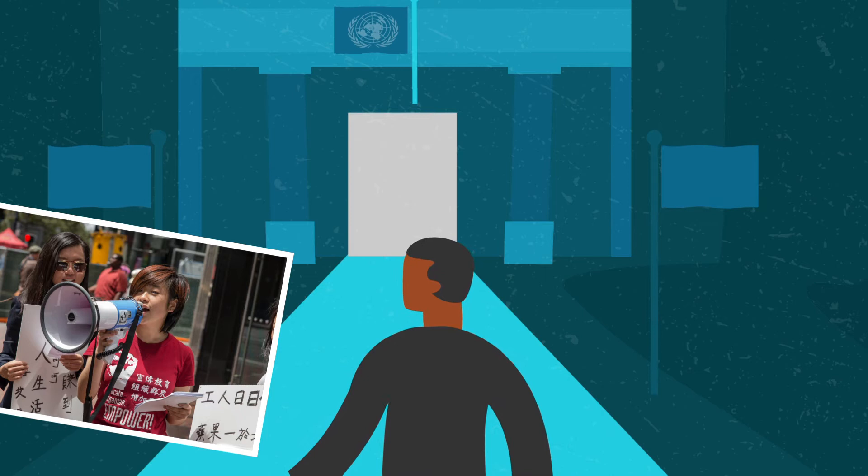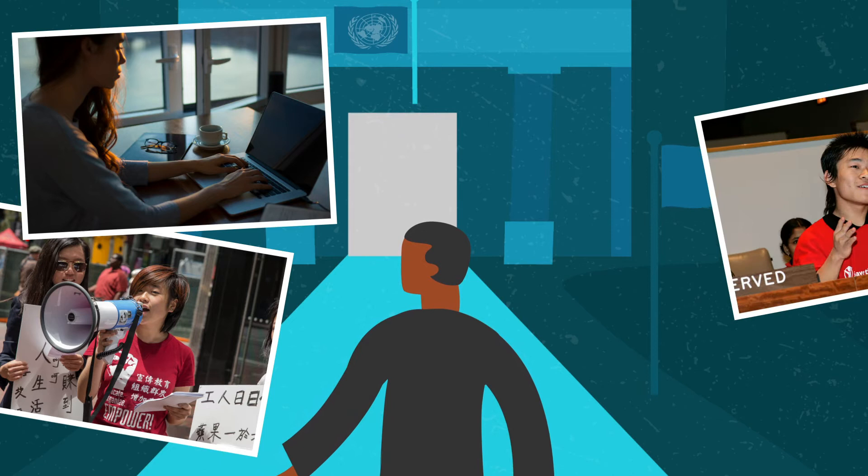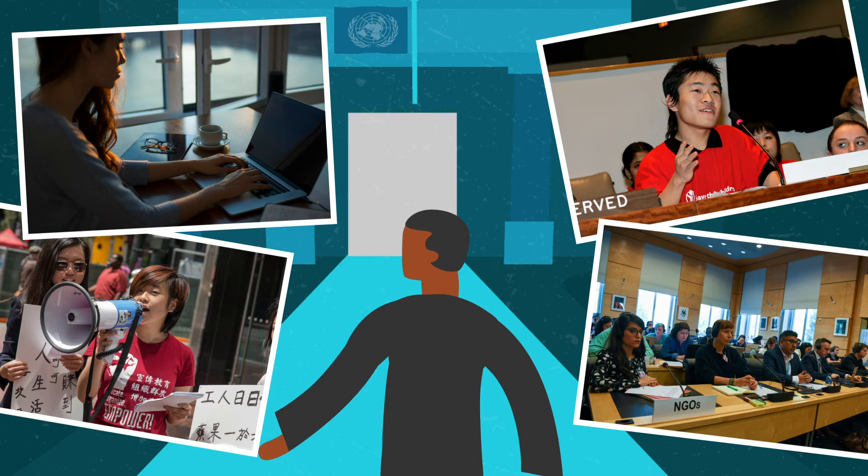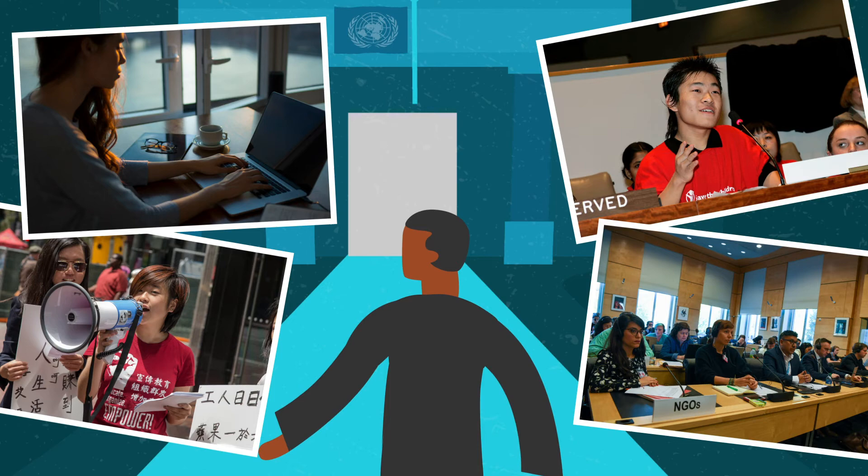Treaty bodies are open and accessible. They rely on defenders like you to tell them what's going on locally — whether it's by filing a complaint about a specific human rights violation in your country, contributing to the development of general comments, or by actively participating in country reviews. You can use treaty bodies to protect and promote human rights and push for change in your community.